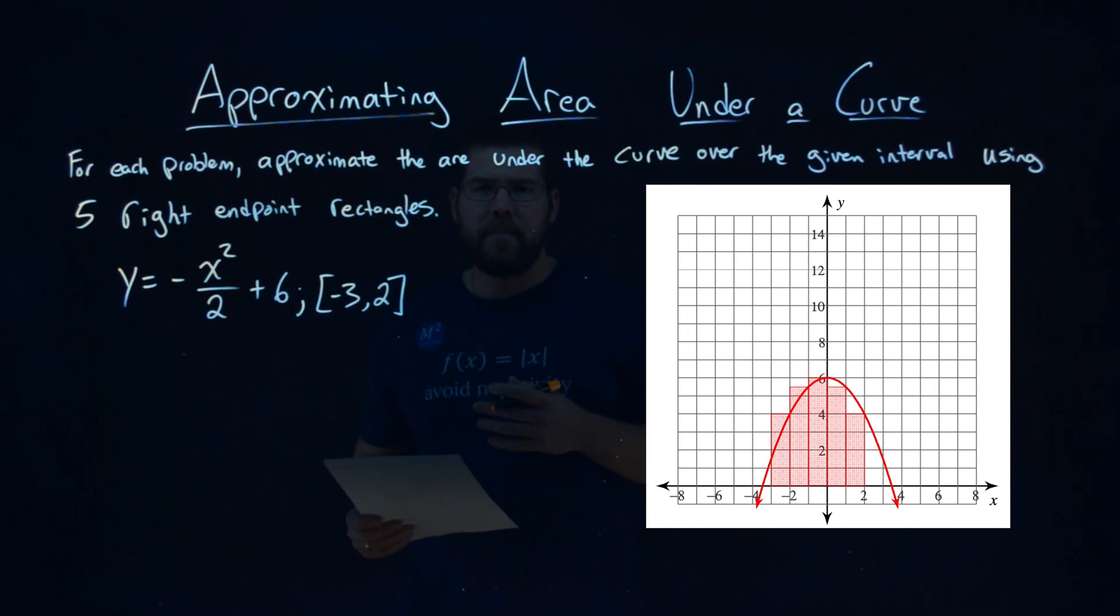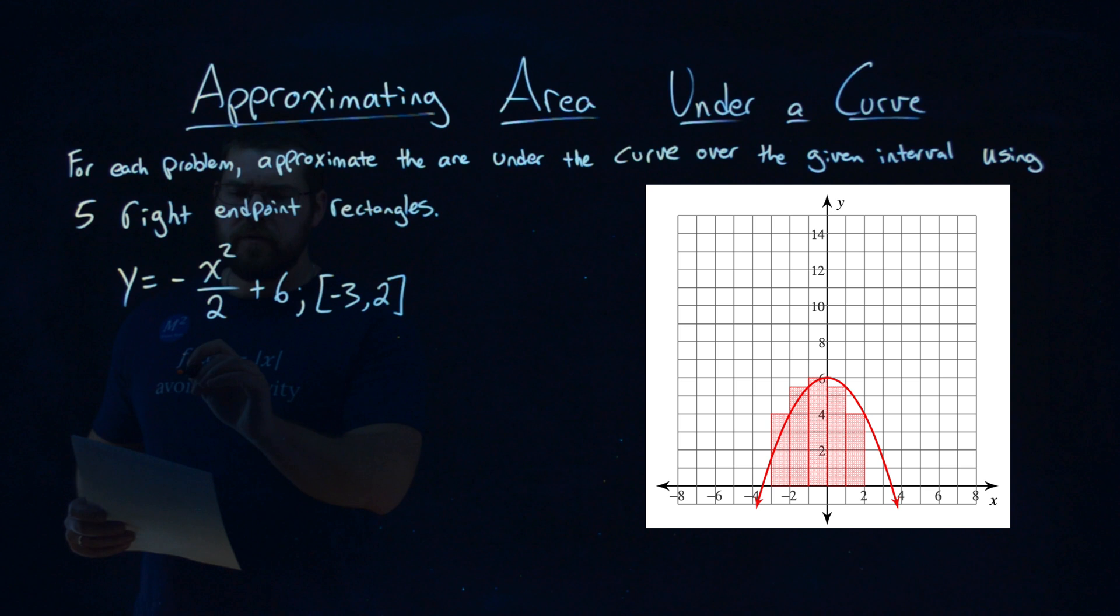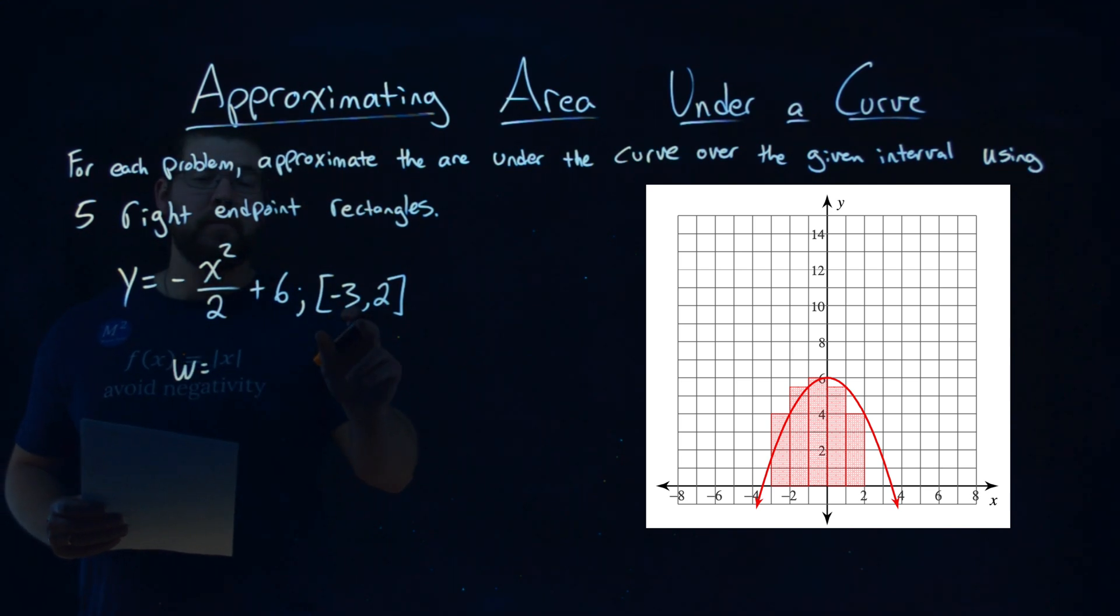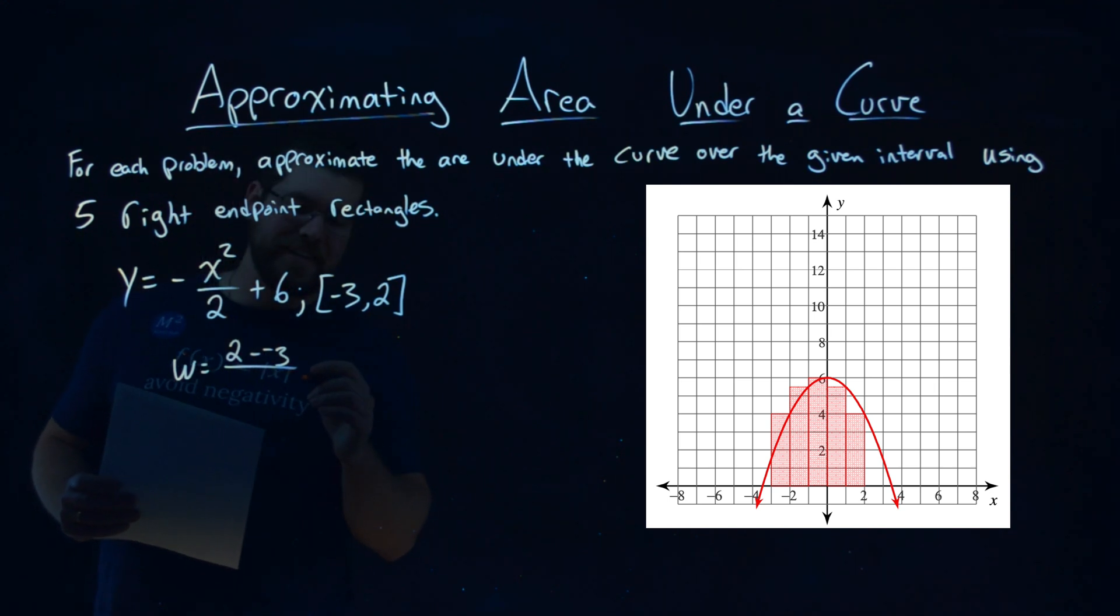Now, with that being said, we want to first find the width of each rectangle. To do that, we take our domain given—the upper point of the domain, 2, subtract the lower point, minus 3—over the number of rectangles we want to find, which is 5.